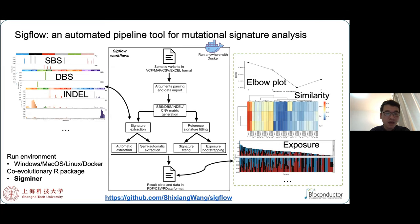Basically, SIGFLOW takes variant records as input and generates a component-by-sample matrix. Next, SIGFLOW will run a specified workflow based on users' input options. Different data and plots are outputted for different workflows. Generally, the SIGFLOW profiles for different types of Mutational Signatures are plotted, and their underlying data are also outputted.